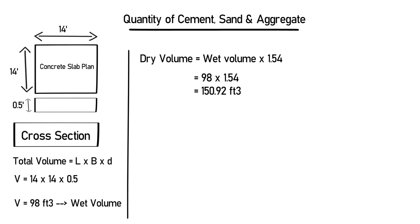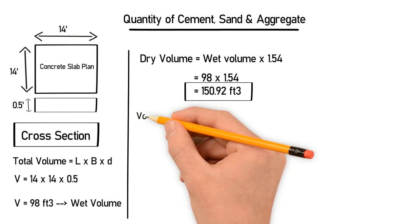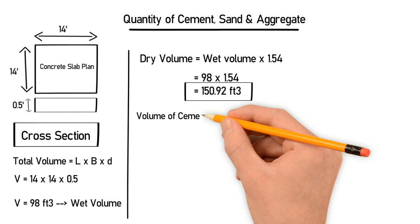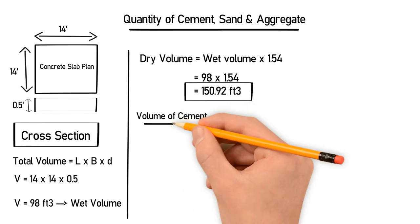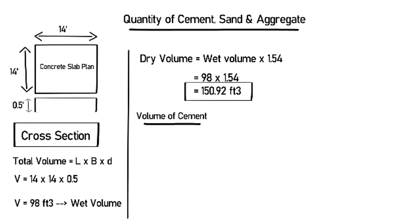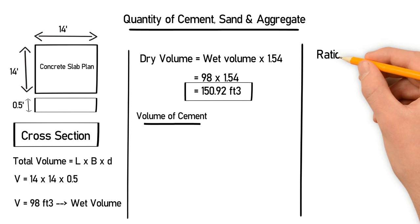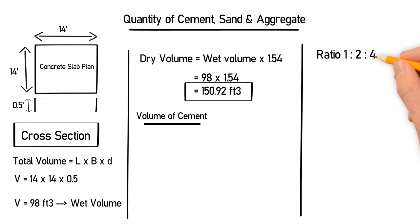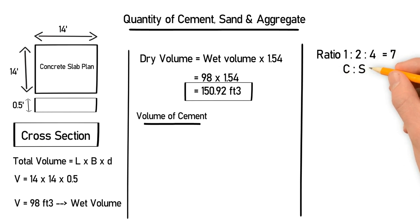So 98 multiplied by 1.54 gives a dry volume of 150.92 cubic feet. Now let's calculate the volume of cement. We need to know the mix ratio, which is 1:2:4 — where 1 is cement, 2 is sand, and 4 is aggregate — giving a total ratio of 1 plus 2 plus 4 equals 7.